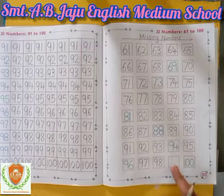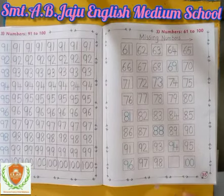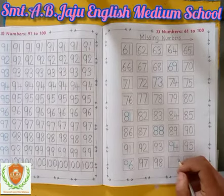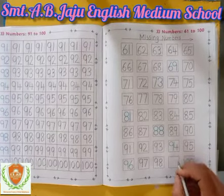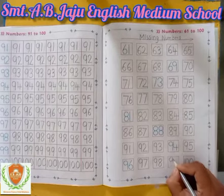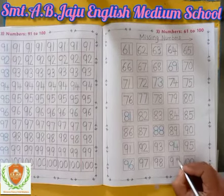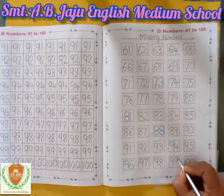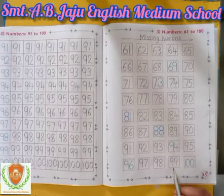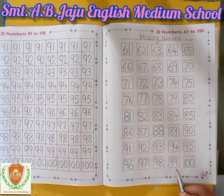So this is 98. After 98, which number will become? Tell me. First write down 9, then one more 9. So 99. After 98, 99 comes.